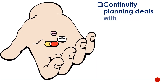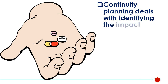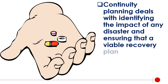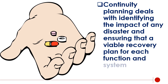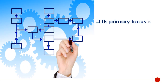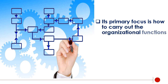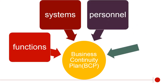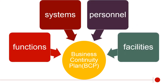Continuity planning deals with identifying the impact of any disaster and ensuring that a viable recovery plan for each function and system is implemented. Its primary focus is how to carry out the organizational functions when a disruption occurs. The business continuity plan, BCP, considers all aspects that are affected by a disaster, including functions, systems, personnel, and facilities.